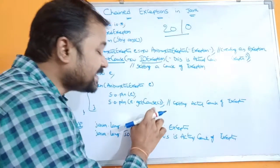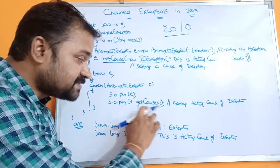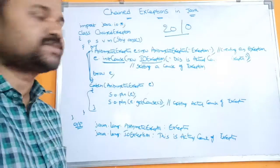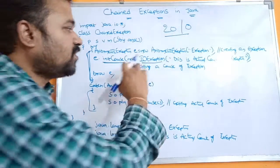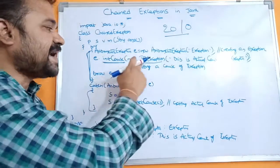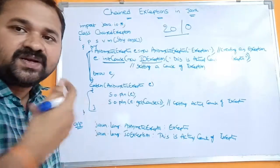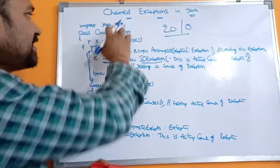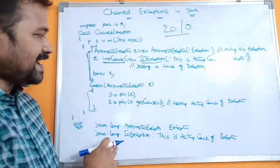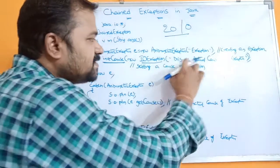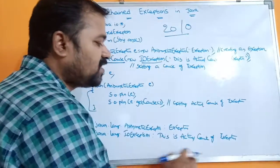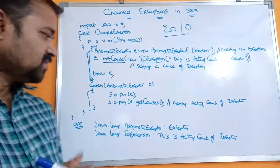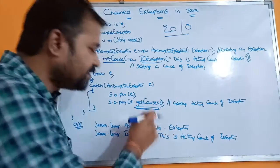Next, System.out.println(e.getCause()). Whenever getCause() is executed, the control goes to the initCause() and that cause information will be printed. The output will be java.lang.IOException: This is the actual cause of exception. The IOException class is present in the lang package, but since we are performing IO operations, we import the IO package. So this is about chained exceptions in Java — getCause() retrieves the cause set by initCause().